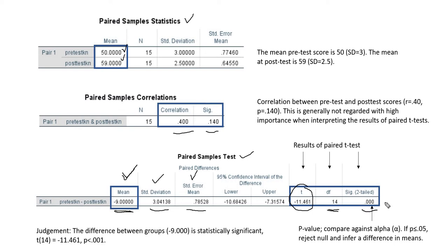The p-value that is given right here is utilized to determine if we have statistical significance. What we do is we compare that p-value against the alpha level that we set for our study. So given that we set alpha at 0.05, then if we observe a p-value right here that is less than or equal to 0.05, then we would reject the null and infer that there is a difference in means.